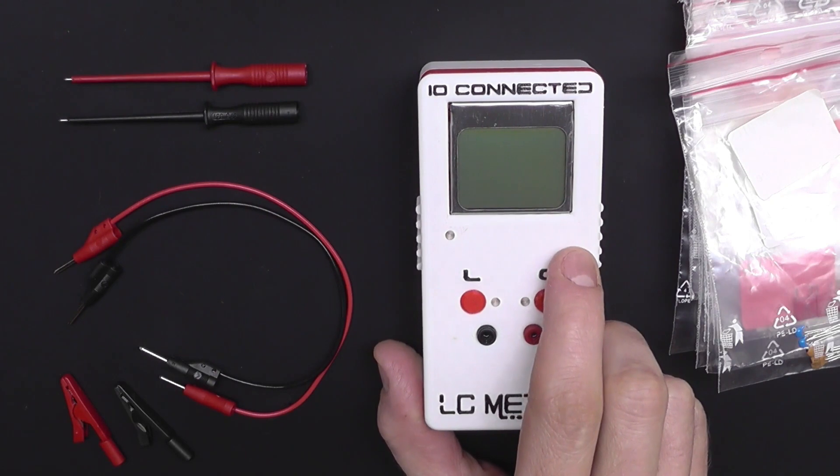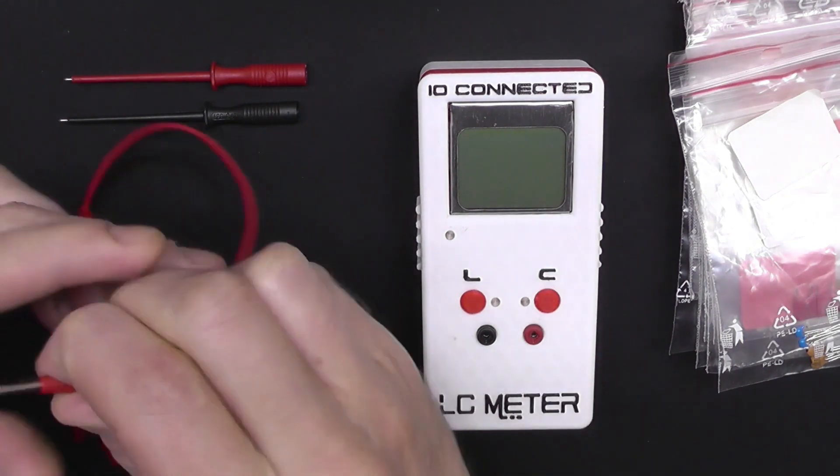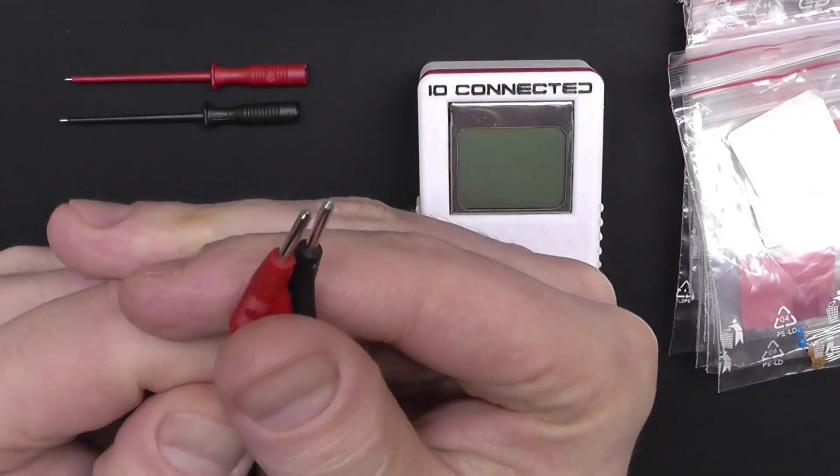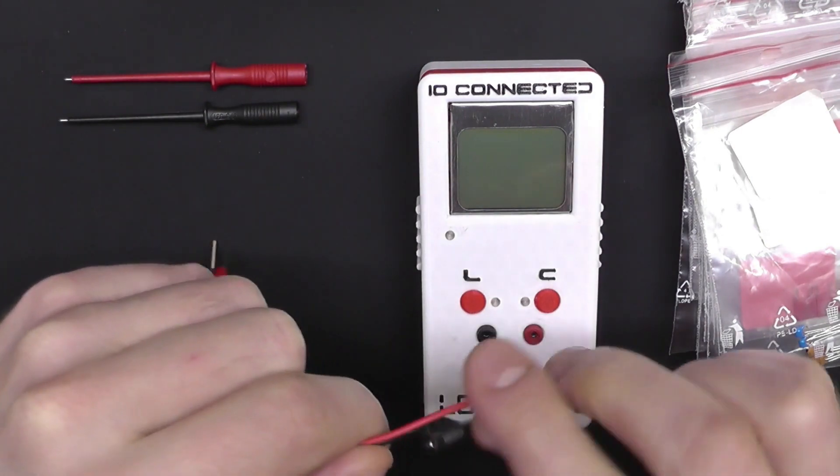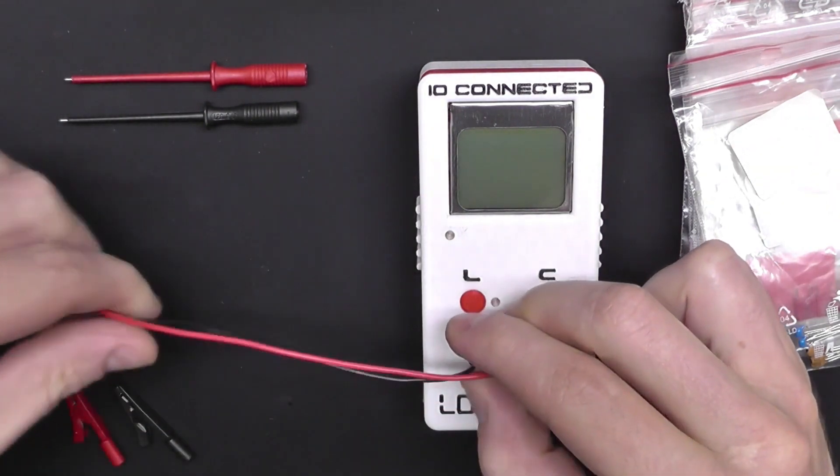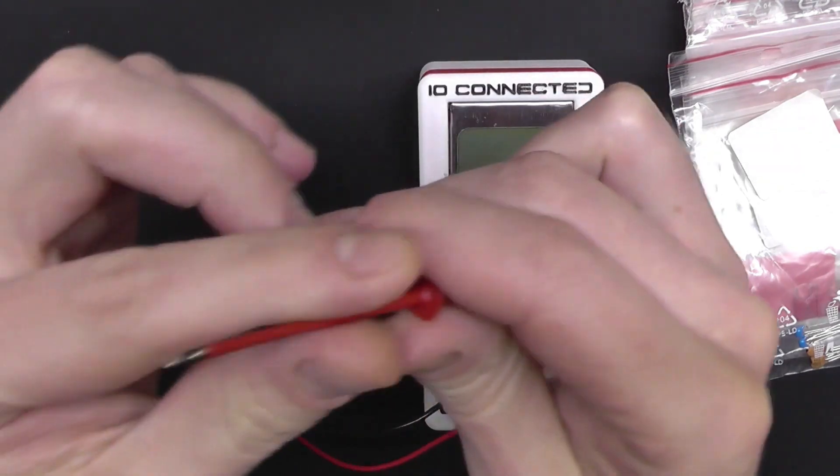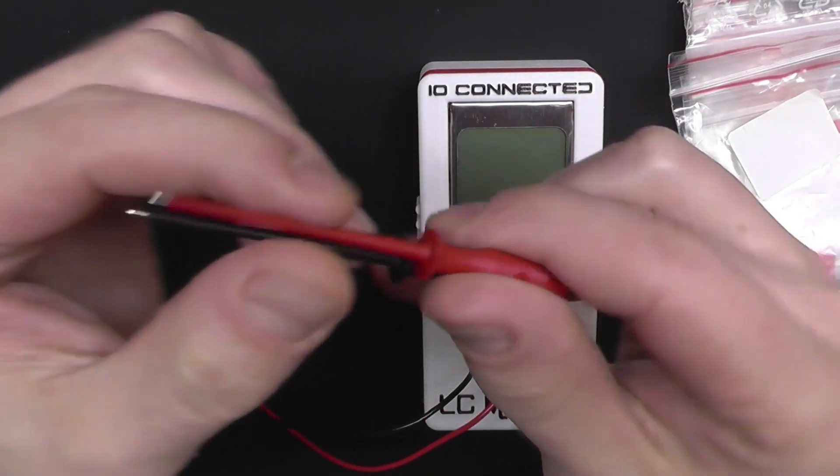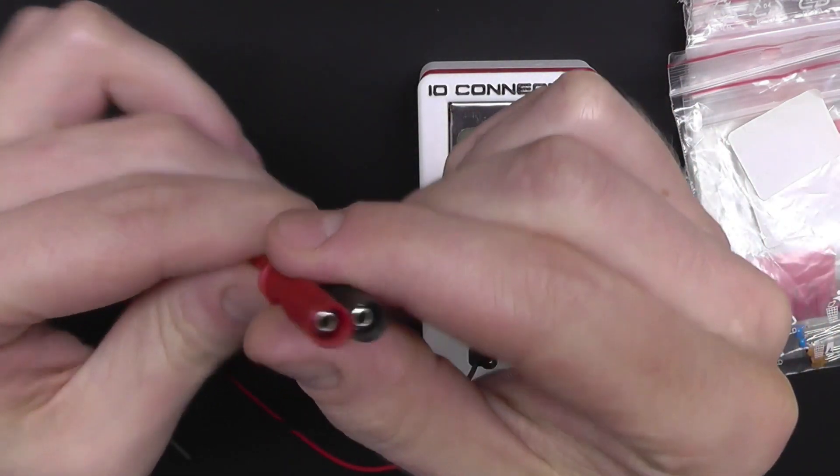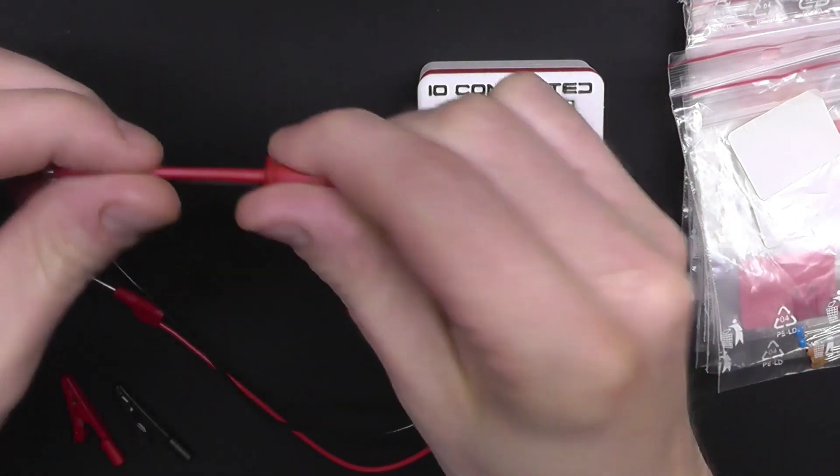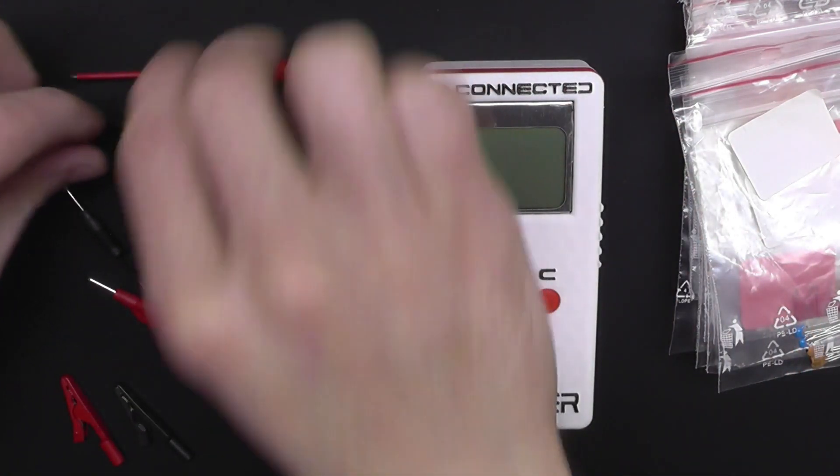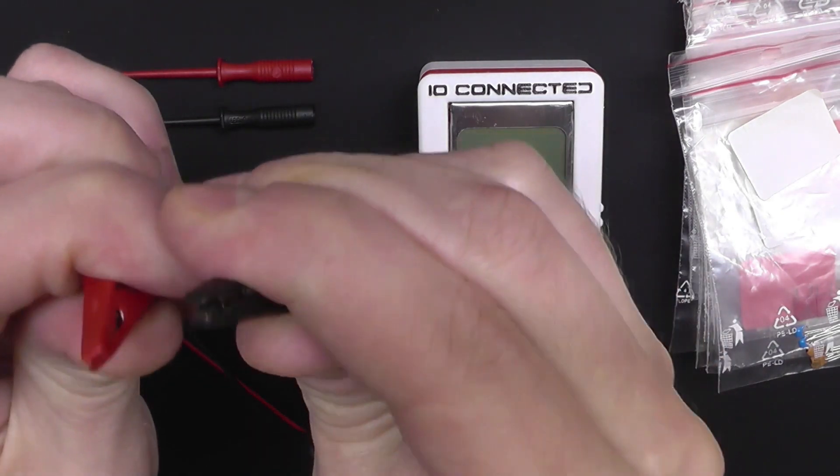You'll see that in a second. I'm using these leads which will fit into these connectors, and I bought two different types of probes for them. I use this one when I'm measuring SMD components or whenever I measure parts which are soldered on a PCB, and for through-hole components I'm going to use these alligator clips.